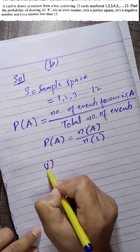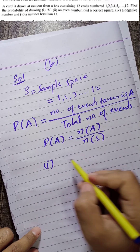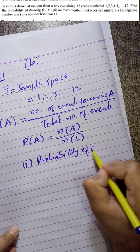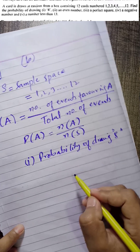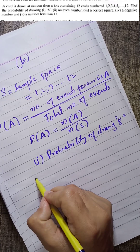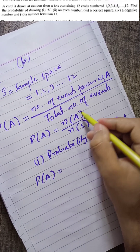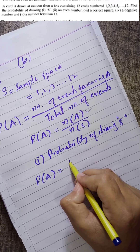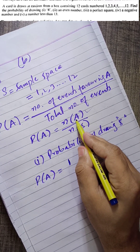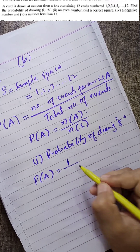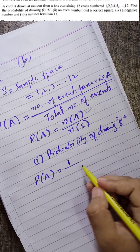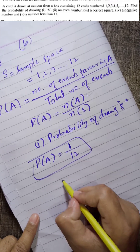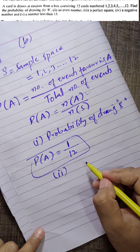First: the probability of drawing 8. The number 8 is just one number, so the number of favorable events is 1. Total events are 12. Therefore the probability of drawing 8 is 1/12.